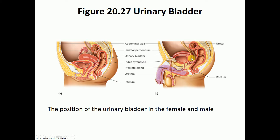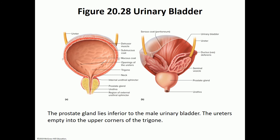In males, the urinary bladder is found anterior to the rectum. The ureter opens up into the posterior surface of the urinary bladder. The wall is made out of four different layers: the innermost mucosal coat, the submucosal layer, a thicker layer of smooth muscle fibers that together form the detrusor muscle, and the outermost serosa layer — which is only present on the upper border as part of the parietal peritoneum.